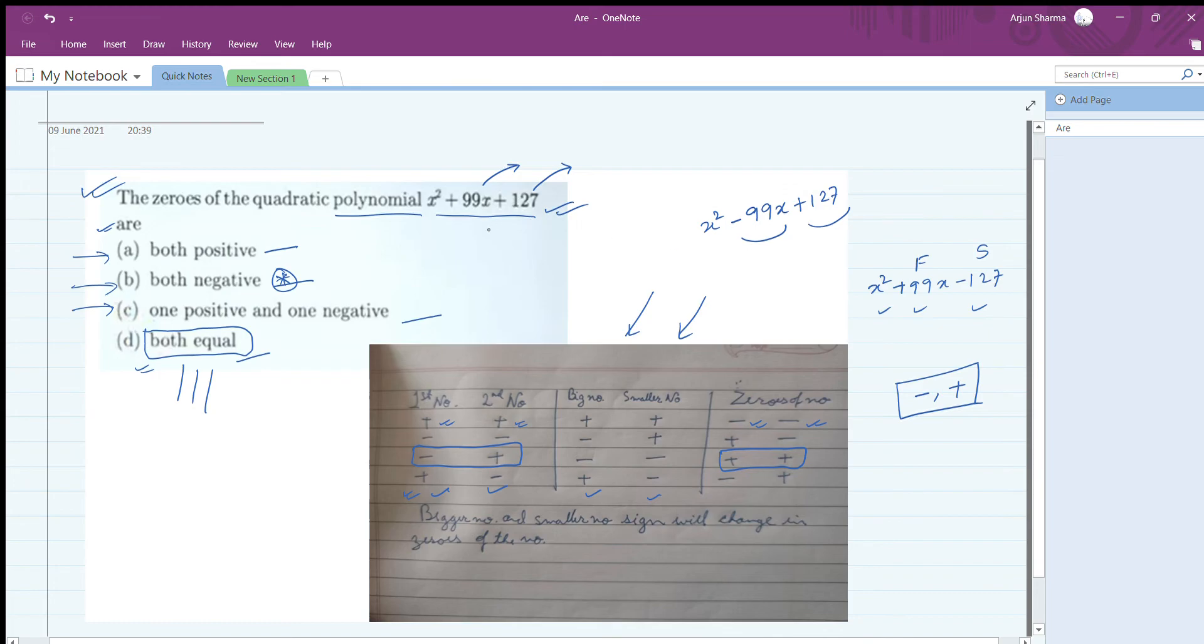That's the shortcut trick here. The shortcut trick is: if both terms are positive, then the zeros are always negative. This is a very important basic concept.